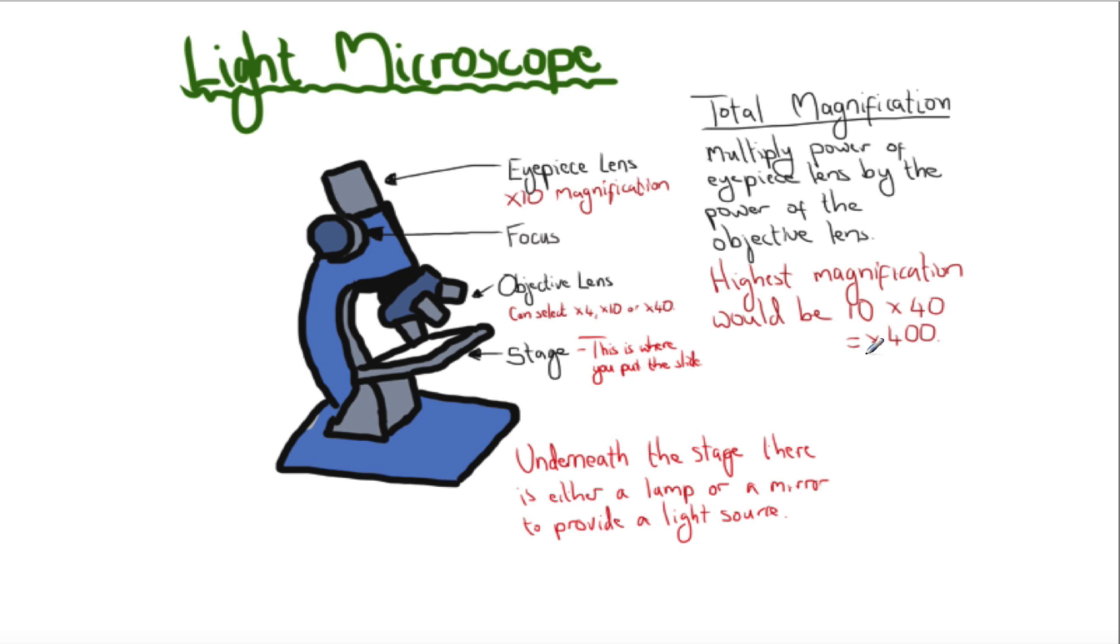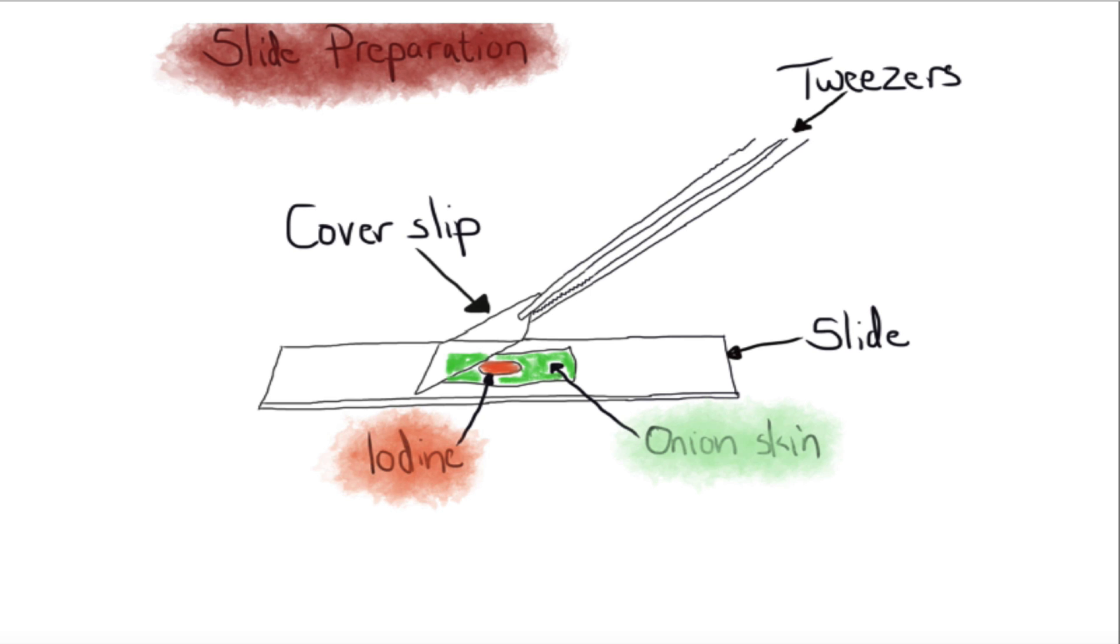I put a note there because my artistic skills weren't good enough to draw a lamp or mirror. There would normally be one there. This is a specified practical, meaning you've got to make a slide either from onion skin or using your own cheek cells, and you must be able to prepare, view, and draw it in the lab.